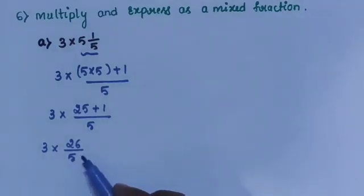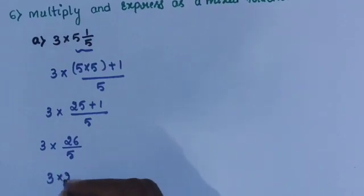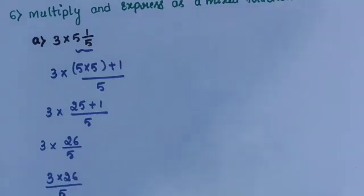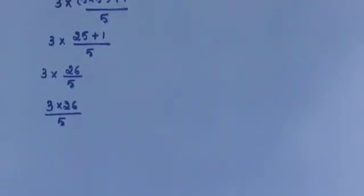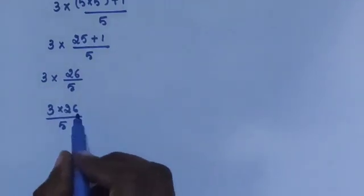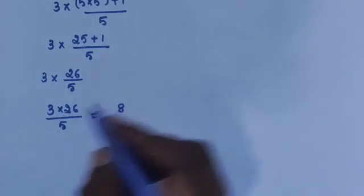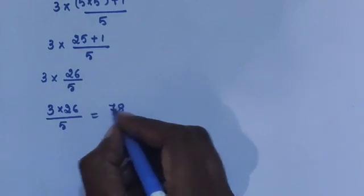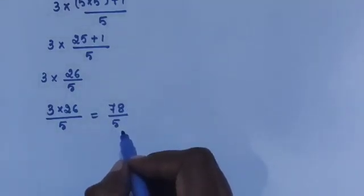This is an improper fraction multiplied by a whole number. 3 is the whole number multiplied by numerator 26, with the denominator 5 as it is. So 3 × 26 = 78. The answer is 78 by 5.